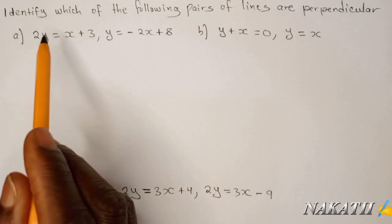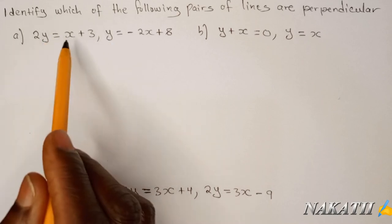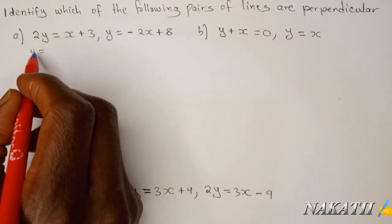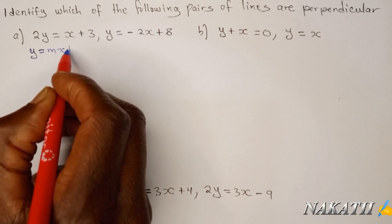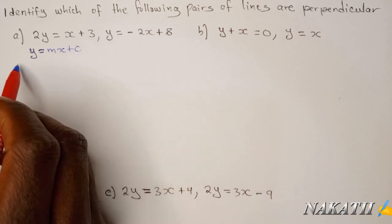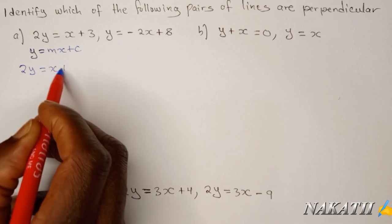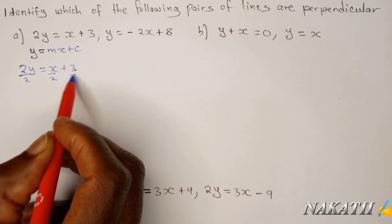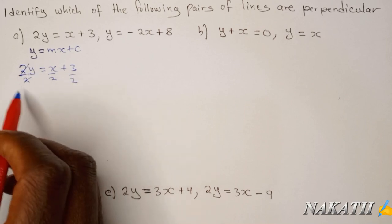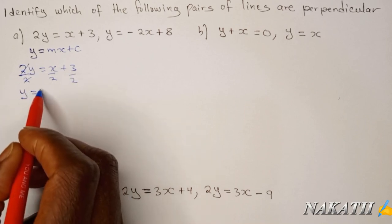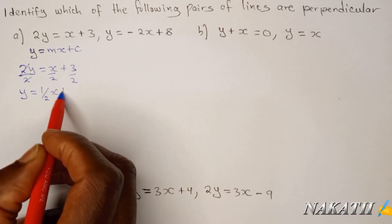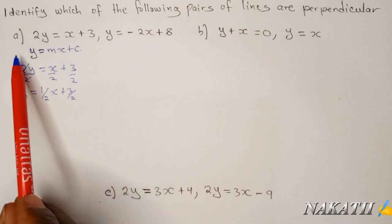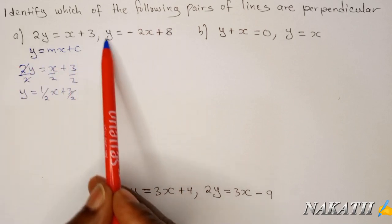To find the gradient, we write the equation in the form Y = Mx + C. This equation is 2Y = X + 3. To rearrange it, divide everything by 2, and you get Y = (1/2)X + 3/2. That is the equation rearranged in the form Y = Mx + C. Now do the same with the second equation.